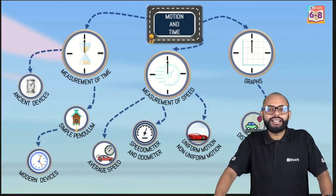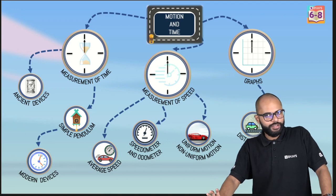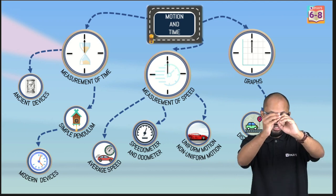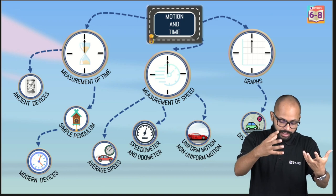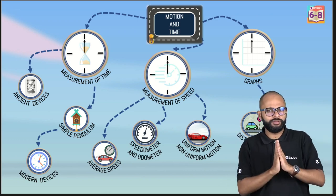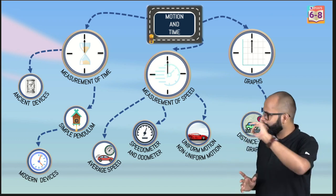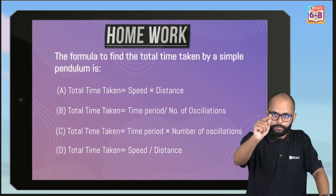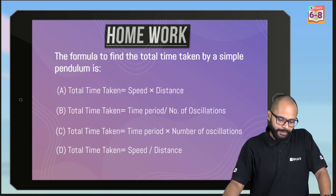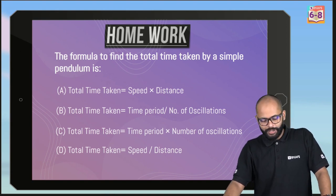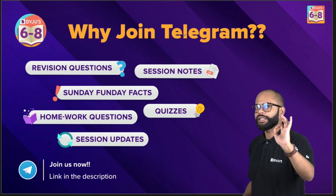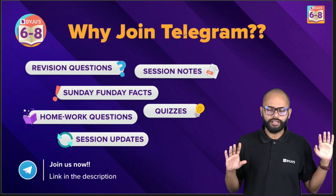So we have revised the whole chapter: time measurement covered ancient devices, simple pendulum, and modern devices; speed covered speedometer, odometer, average speed, uniform and non-uniform motion, and distance-time graphs. A small homework question: the formula to find the total time taken by a simple pendulum — give your answer in the comments. Also, join the Telegram channel to get the mind map and notes directly.